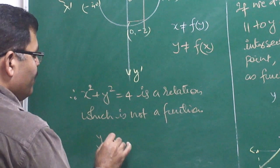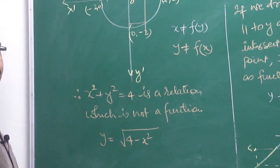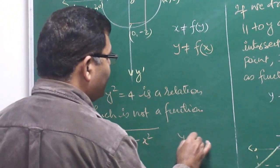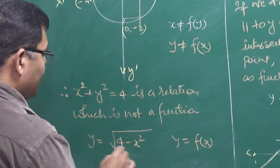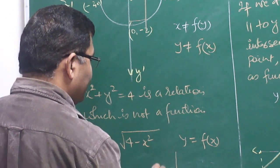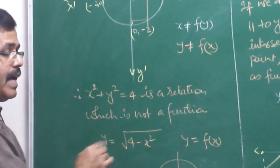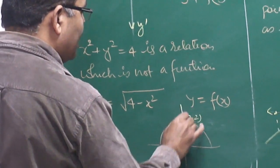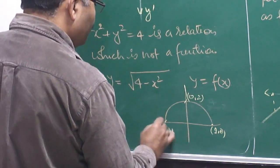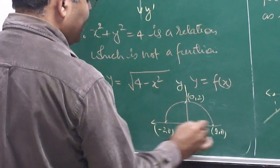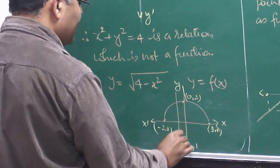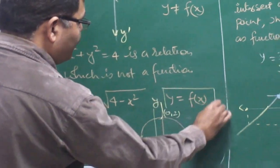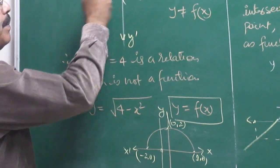However, if we write y equals under root of (4 minus x squared), then this is a function. Why? Because y cannot take negative values — the graph is only the upper semicircle, the positive region. In this case, if we draw any line parallel to the y-axis, for every value of x there is a unique value of y, and therefore y equals √(4−x²) is defined as a function of x.